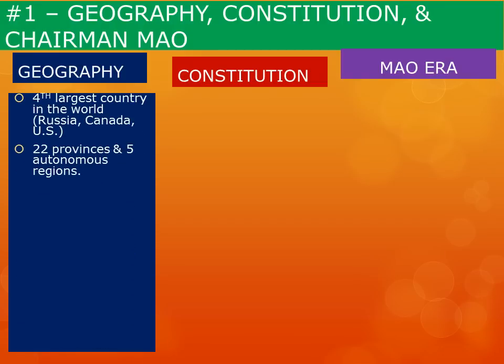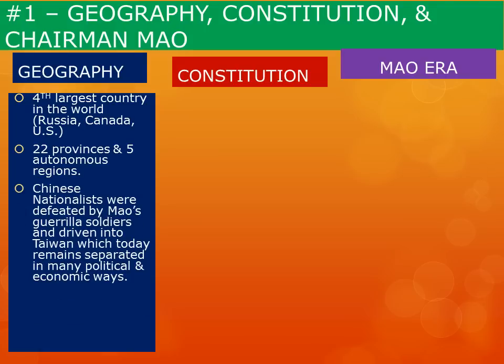For geography, you need to understand that China is the fourth largest country in the world after Russia, Canada, and the U.S. It contains 22 provinces and five autonomous regions.